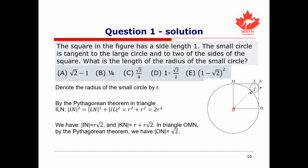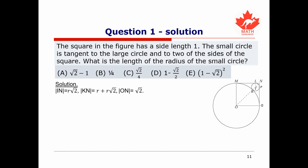We know the distance between O and N is the square root of 2, by applying the Pythagorean theorem to triangle OQN. So, the diagonal IN is r times the square root of 2, and the distance KN is R plus r times the square root of 2, since K, I, and N all lie along the same line — we simply add the distances KI and IN.